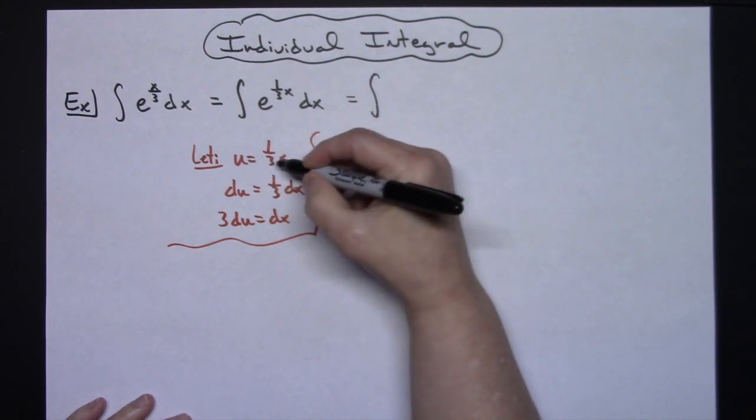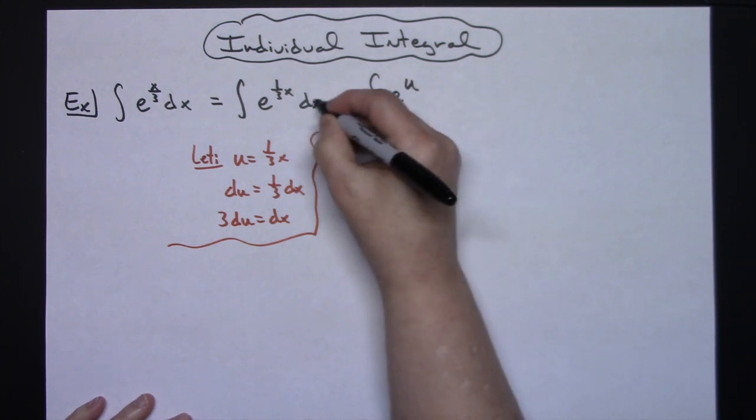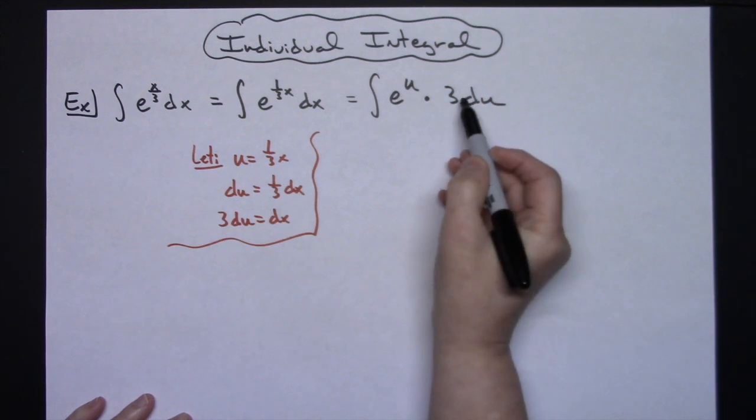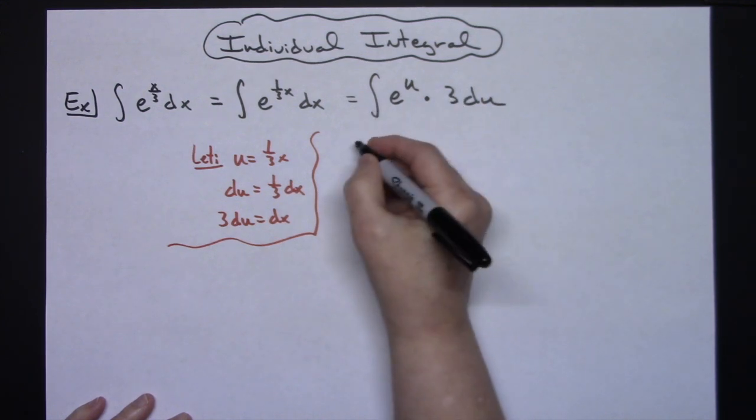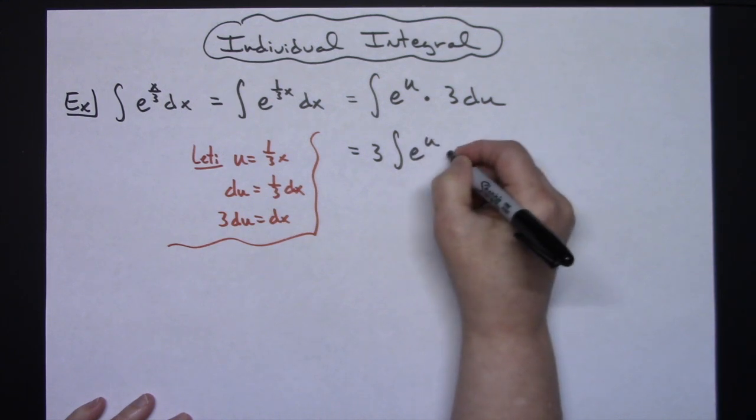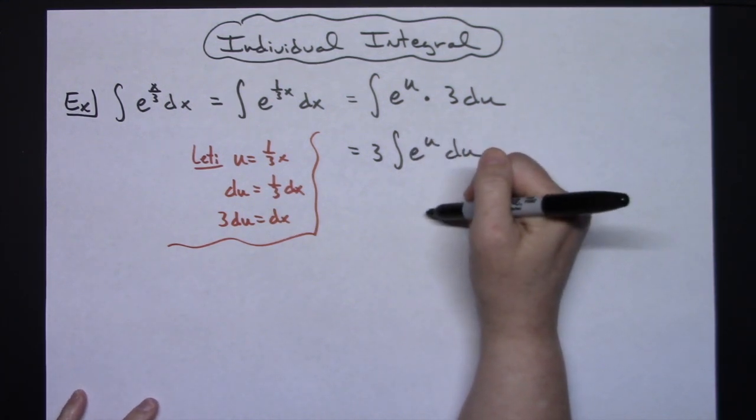Coming back up here I'm going to make my substitution. So I'll have an e raised to the u, changing the dx for what that equals, I'll have a 3 du. And then this whole number I can pull it out in front of my integral, so 3 times the integral of e to the u du.